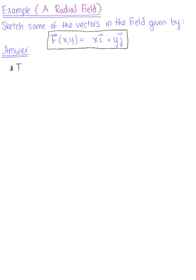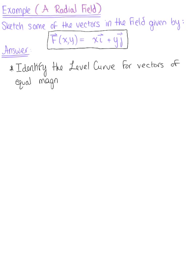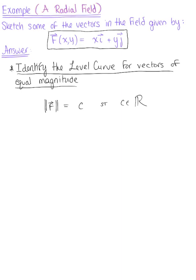The first thing we need to do here is identify the level curve for vectors of equal magnitude. So we want the magnitude of our vector field, capital vector F, to be equal to c, where c is some arbitrary scalar.